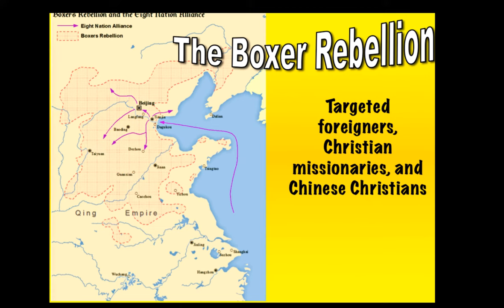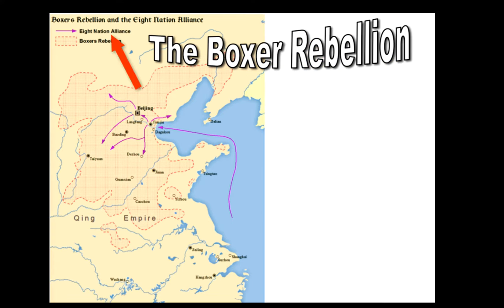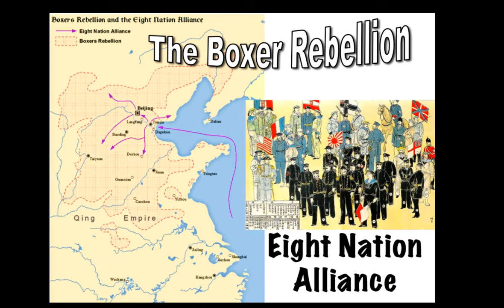The Boxer Rebellion caused widespread fear amongst foreigners and reflects the anger in China over foreign influence in the nation. During the rebellion, many foreigners fled to Beijing hoping to escape getting killed. You may notice on this map it says something about the eight nation alliance. Most of the time, people getting murdered is bad for business. So in August of 1900, troops from Germany, Japan, Russia, Britain, France, Italy, and Austria-Hungary rolled up to Beijing to crush this rebellion.